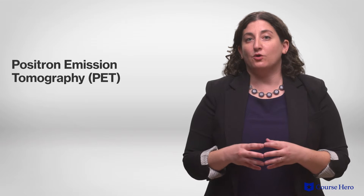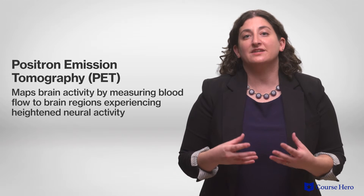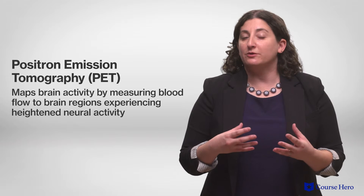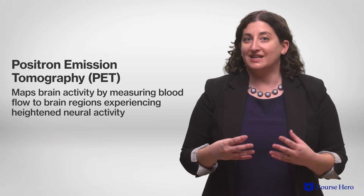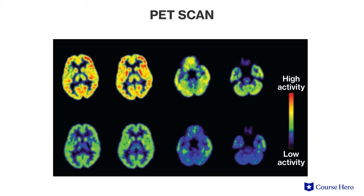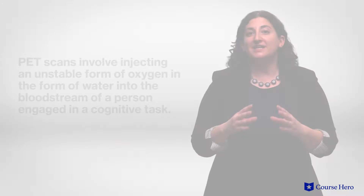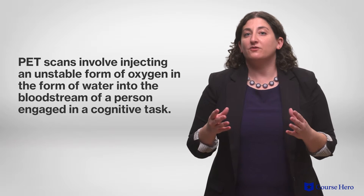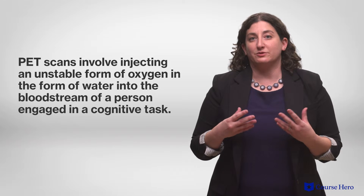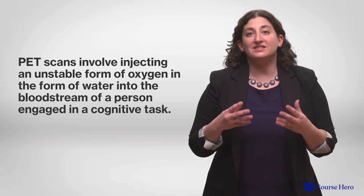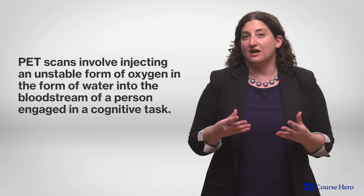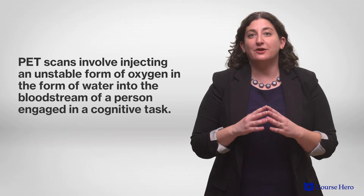Positron emission tomography, or PET, maps brain activity by measuring blood flow to brain regions experiencing heightened neural activity. This lets us see what brain regions are active during different tasks, because the brain regions with the highest activity are the regions important to completing those tasks. PET scans involve injecting an unstable form of oxygen, which has a half-life of 123 seconds, in the form of water into the bloodstream of a person engaged in a cognitive task. The PET scanner measures the positrons emitted as the isotope decays.